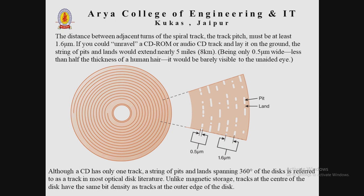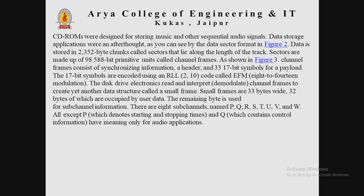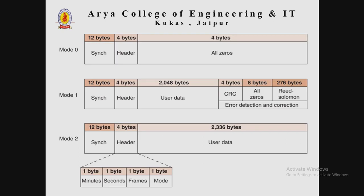As you can see from the figure, in Mode 0 there are 12 bytes sync, 4 bytes header, and 4 bytes all zeros. In Mode 1 and Mode 2, the frame structure is also defined, with small frame numbers 0 through 97, and sub-channels are defined as well. There is a 24-byte payload, and 98 of these frames equals one sector. CIRC, also known as cross-interleaved Reed-Solomon code, is also used.